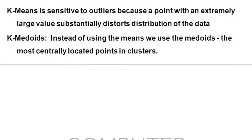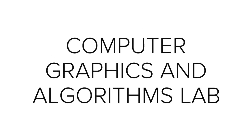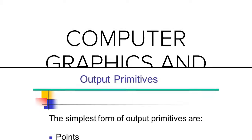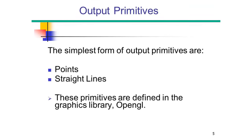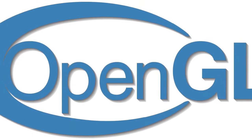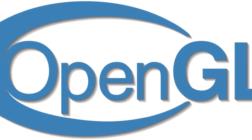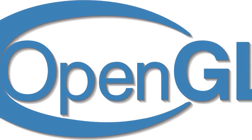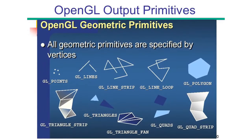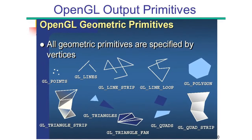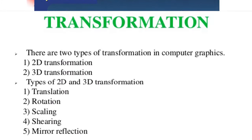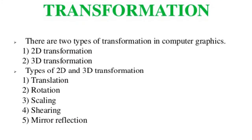The next lab is computer graphics and algorithms lab. The main objectives are to introduce the basics of output primitives through OpenGL, to design different types of transformations in graphics, and to gain familiarity with different types of clipping and polygon algorithms.